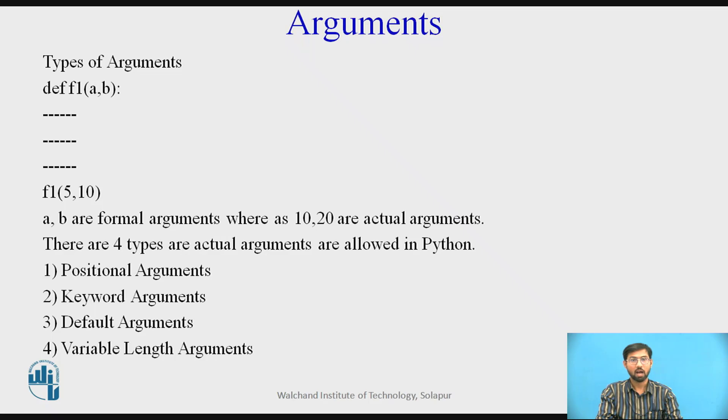Next, we are learning arguments and its types. We define f1(a, b), so we are defining arguments a and b. 5 and 10 are arguments. A and B are formal arguments where 10 and 20 are actual arguments. These four types of actual arguments are allowed in Python: positional arguments, keyword arguments, default arguments, and variable length arguments.